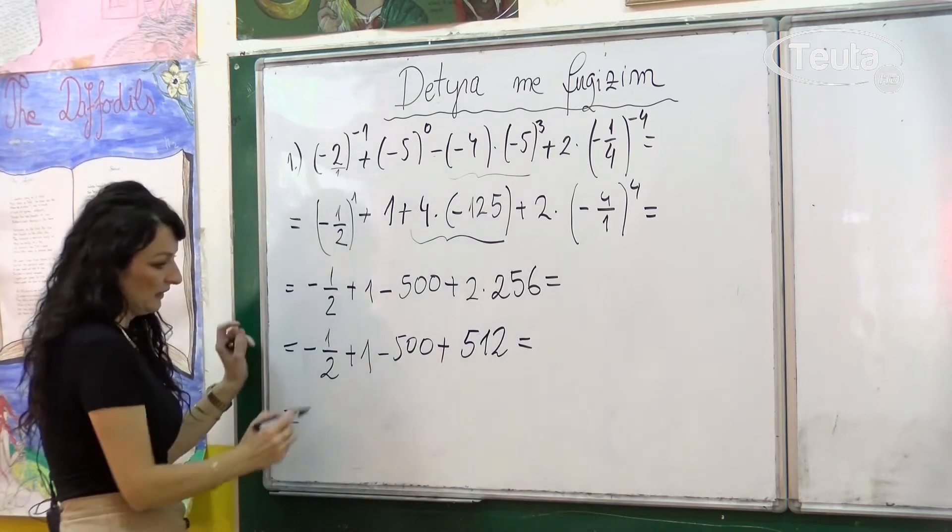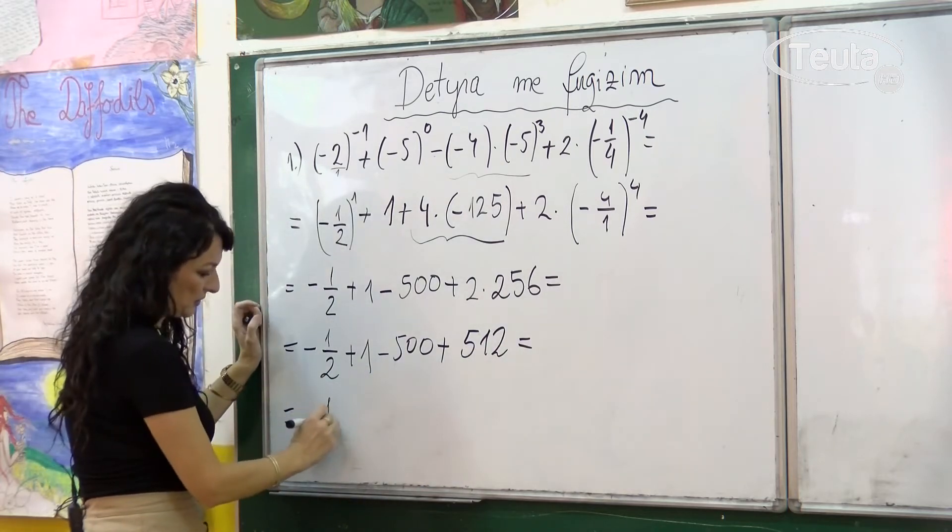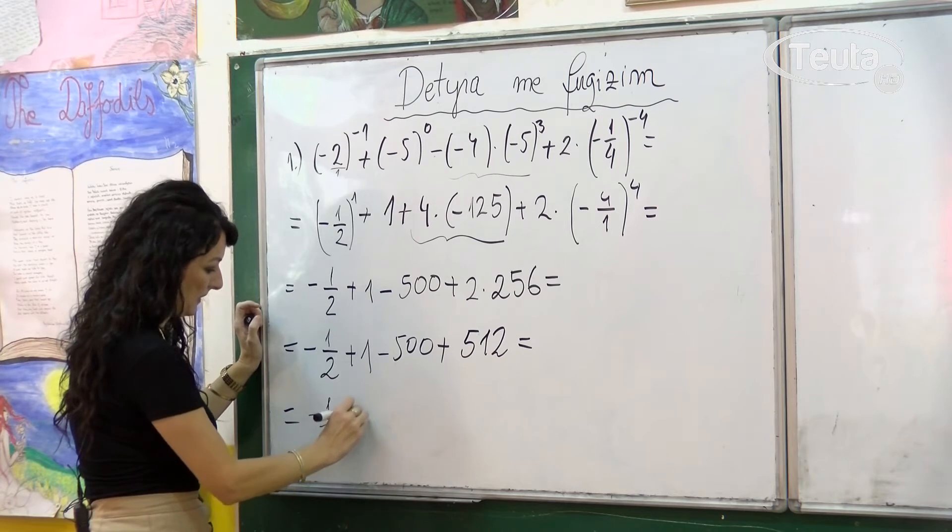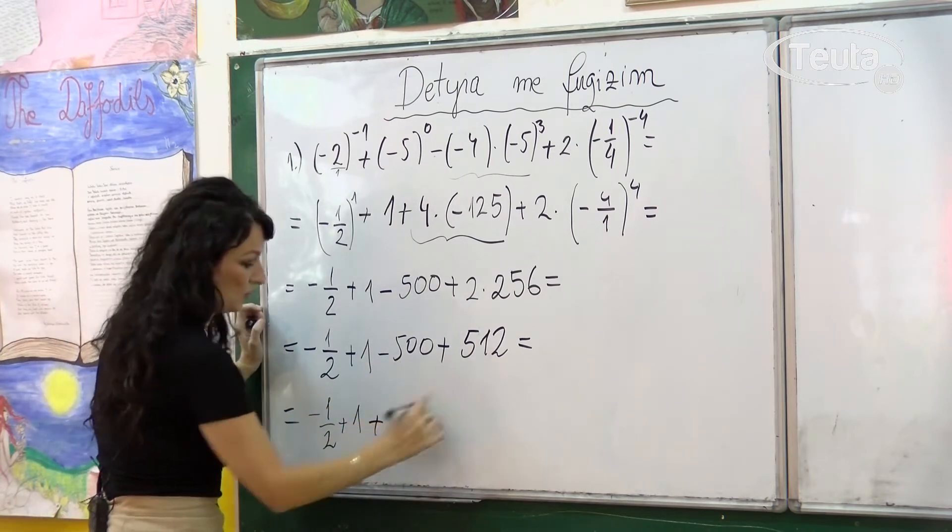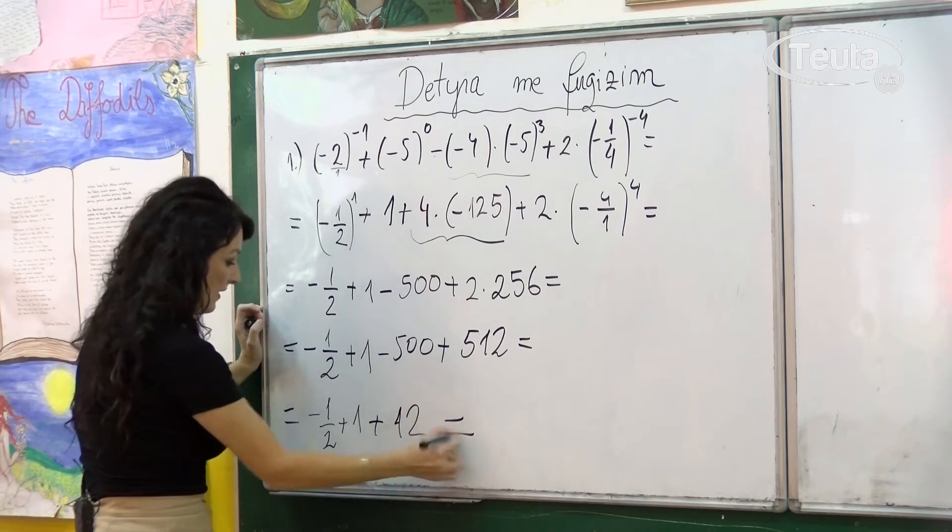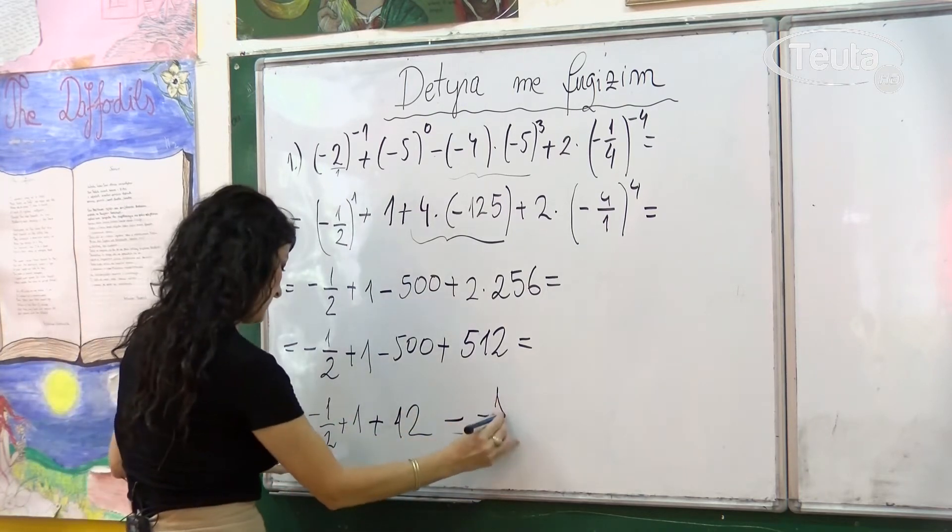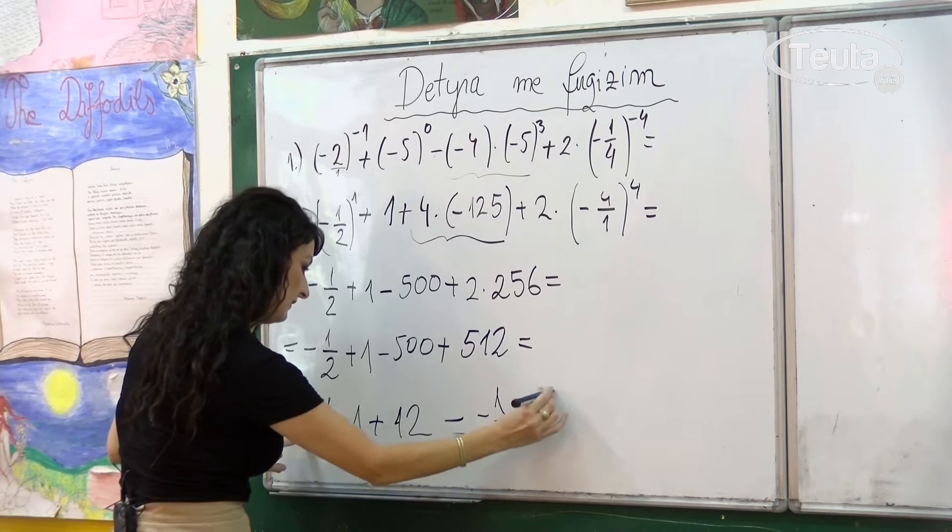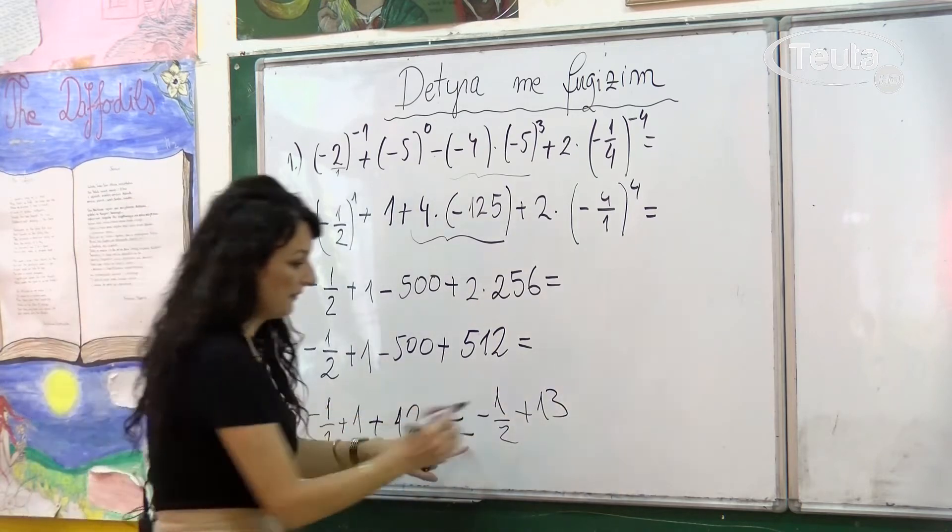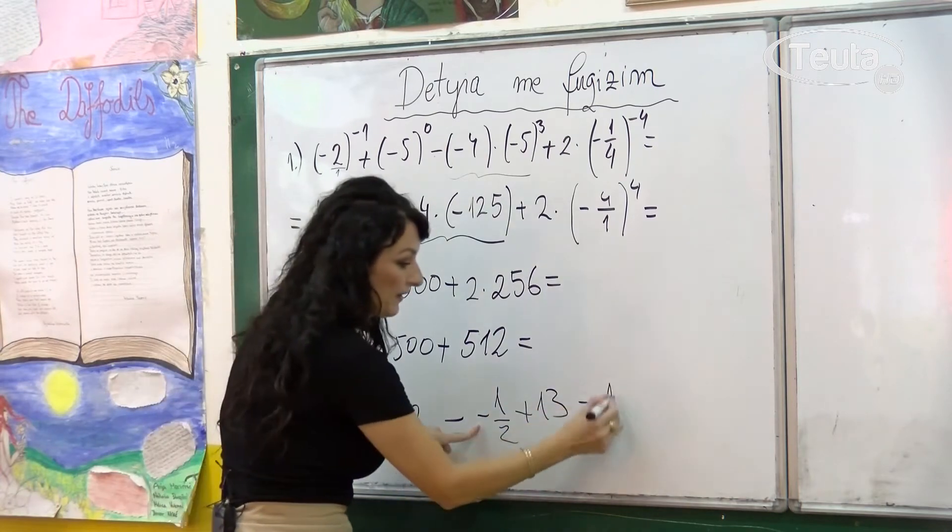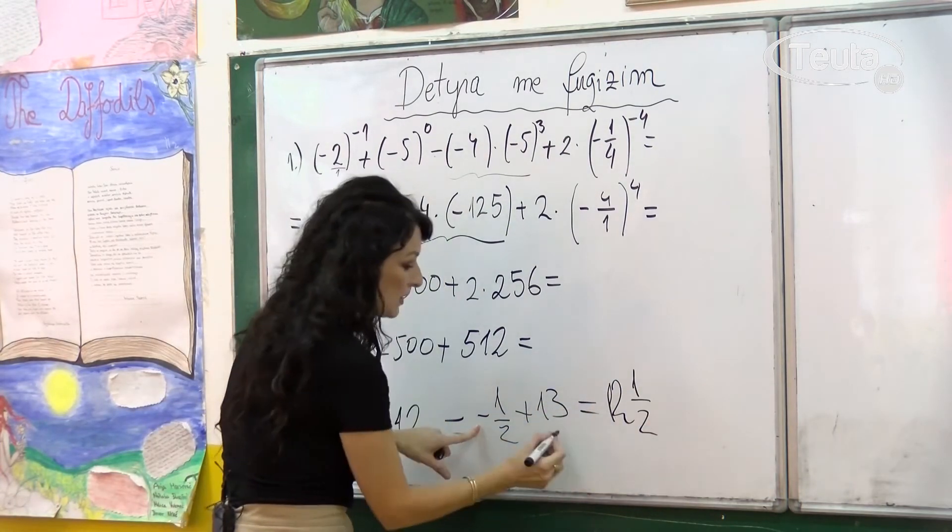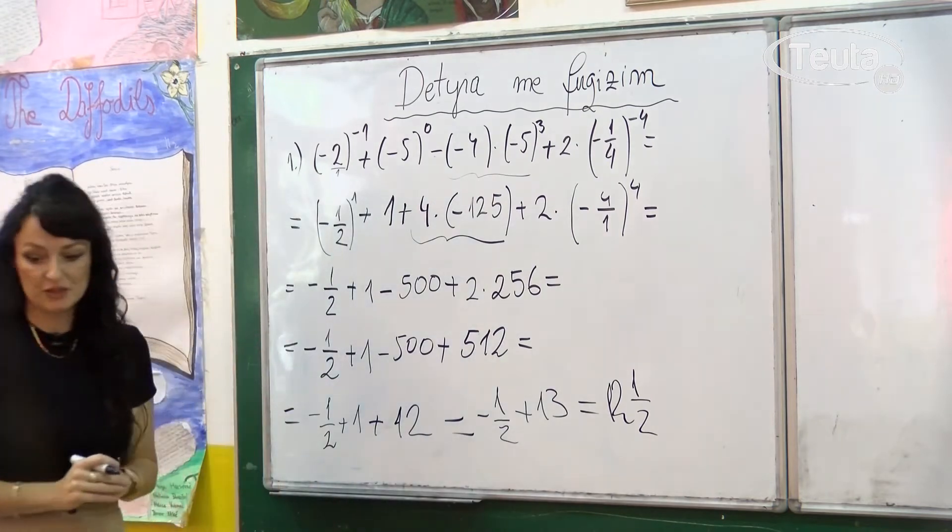Dhe i kryejmë veprimet. Kemi më thjeshtë këto dy të parët dhe t'i përshkruajmë: minus 1 e 2 ta plus 1, këtu kemi plus minus 500 plus 512 janë plus 12, dhe fitojmë minus 1 e 2 ta plus 13. Gjithsesi, nëse e rregullojmë këtë shprehje, kur nga 13 e zbresim një e gjysë, kemi 12 plotë e 1 e 2 ta, ose thjesht mund ta punoni me thyesa.